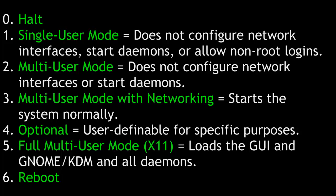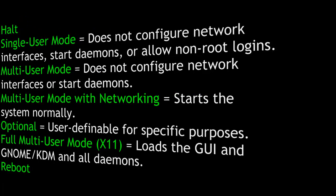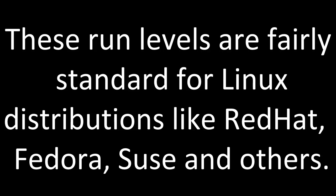4 is optional and user-definable for specific purposes. 5 is the default in most Linux distributions — it's full multi-user mode with X11, so it launches X Windows, loads the graphical user interface and GNOME or KDM and all daemons. And finally, 6 is reboot. These run levels are fairly standard for Linux distributions like Red Hat, Fedora, SUSE, and others.